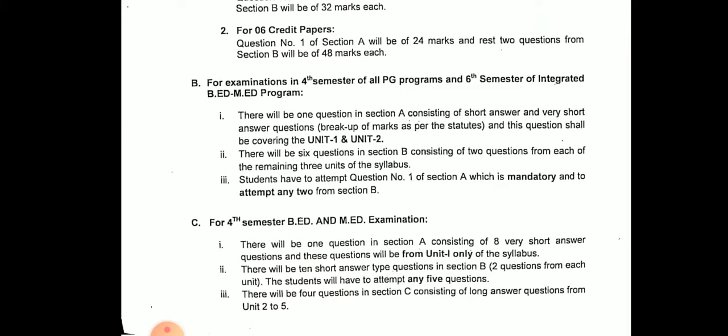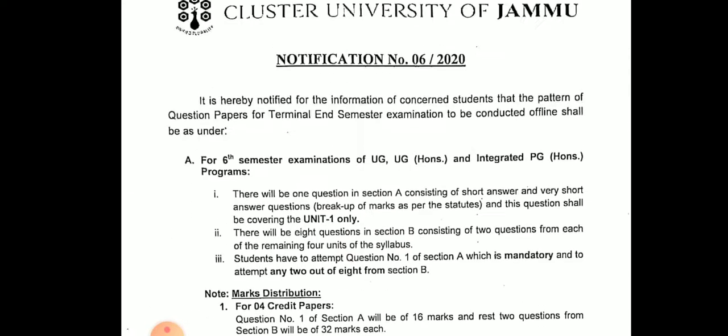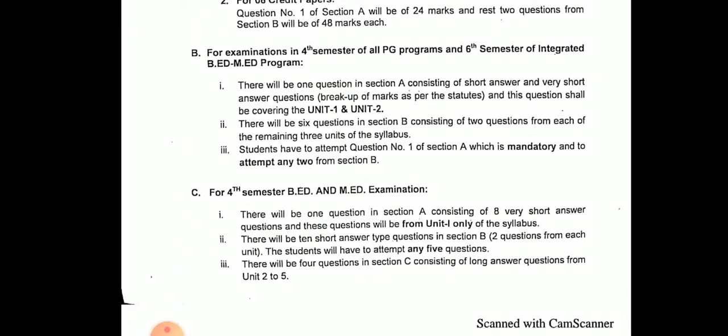For the examination of post-graduation programs and the integrated BA programs, there will be one question in Section A consisting of short answers and very short answers, covering unit numbers 1 and 2. There are 6 questions in Section B — 2 questions from each of the remaining 3 units (units 3, 4, and 5). Question number 1 is compulsory and attempt any 2 questions from Section B. This is for offline mode for Semester 4, B.Ed. and M.Ed.